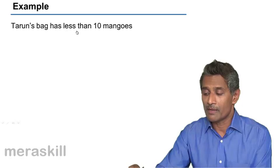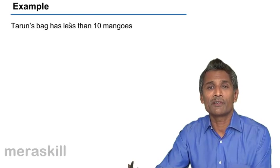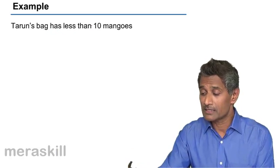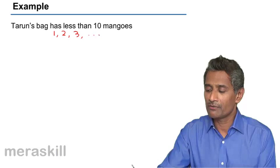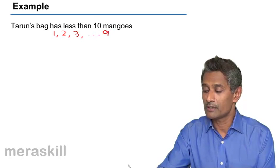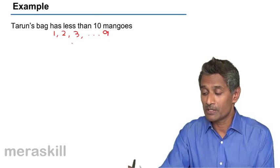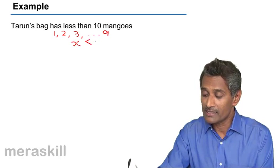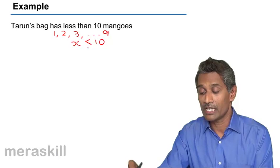The first example says Tarun's bag has less than 10 mangoes. If we put this in the form of a mathematical inequality, Tarun's bag could have 1, 2, 3, or any number up to 9, but definitely not 10. So we write this inequality as x < 10, where x is the number of mangoes. All these numbers satisfy this particular inequality.